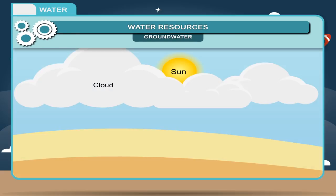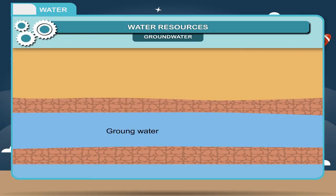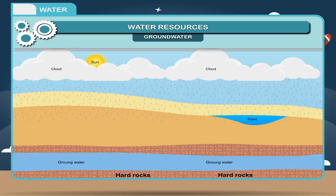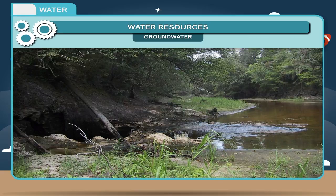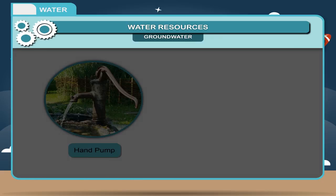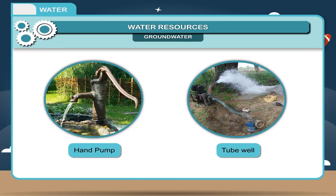Groundwater is the water present beneath the earth's surface. Some amount of surface water from ponds, lakes, reservoirs, and rivers percolates through the soil and collects above non-porous rocks to form groundwater. Rain water is the main source of groundwater. Water that seeps down collects between layers of hard rocks and is called an aquifer. Groundwater comes out at some places to form natural springs. The level of water under the ground is known as the water table. Many people in cities and villages use groundwater through hand pumps and tube wells.